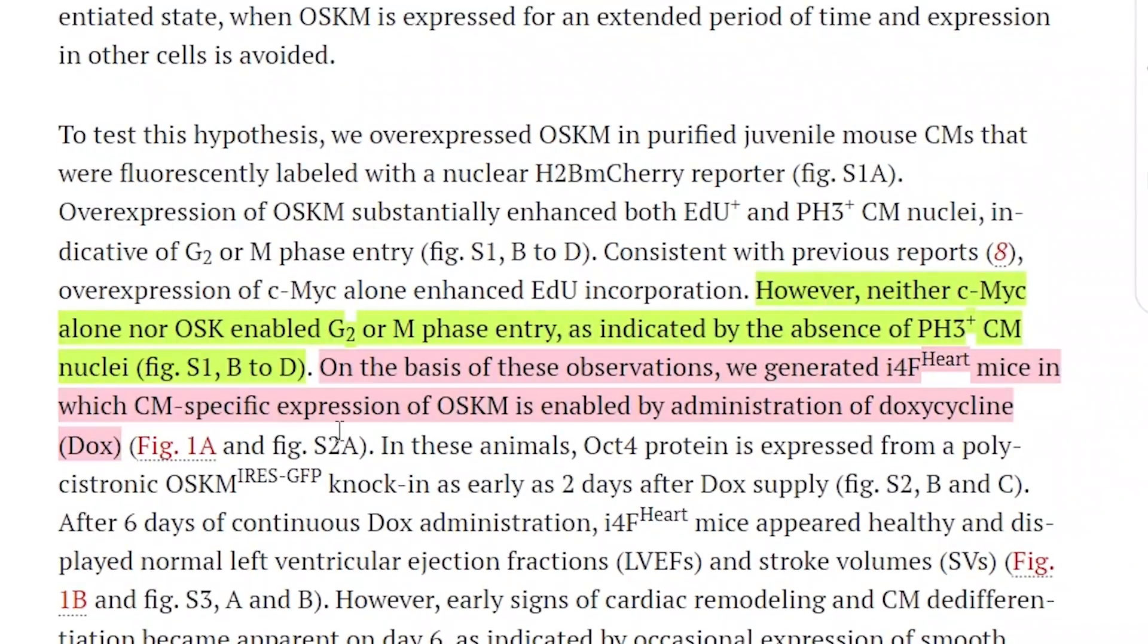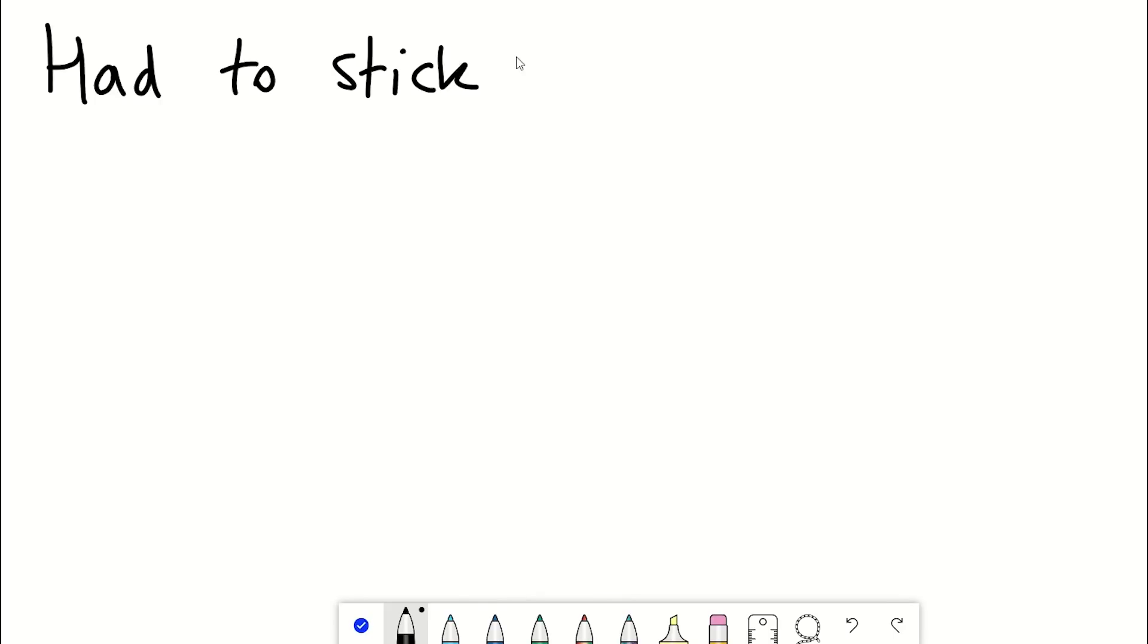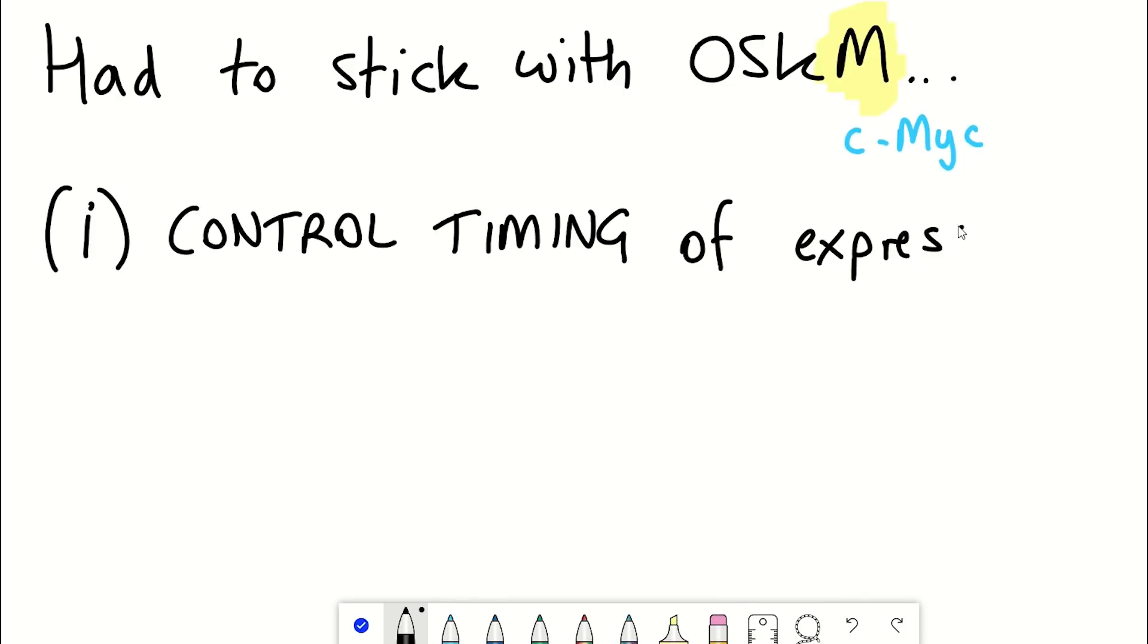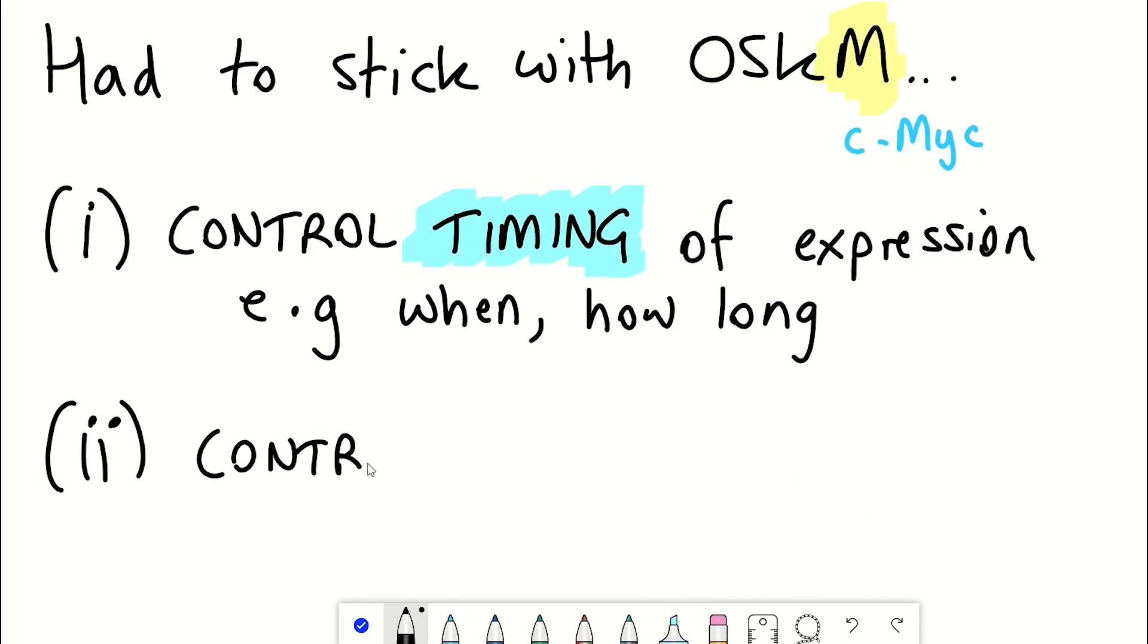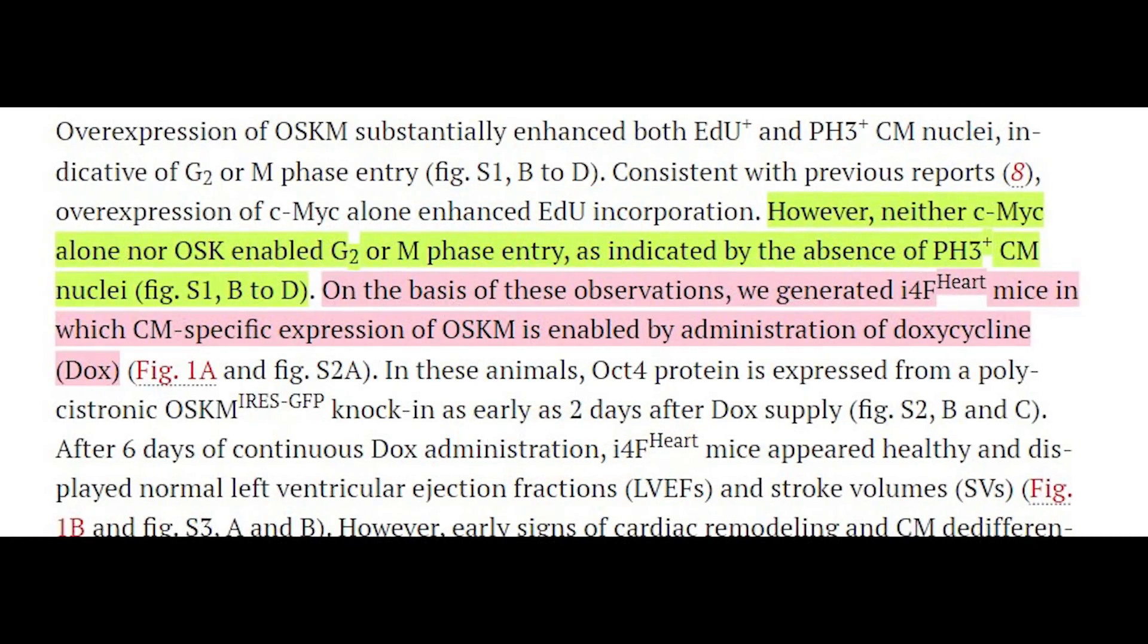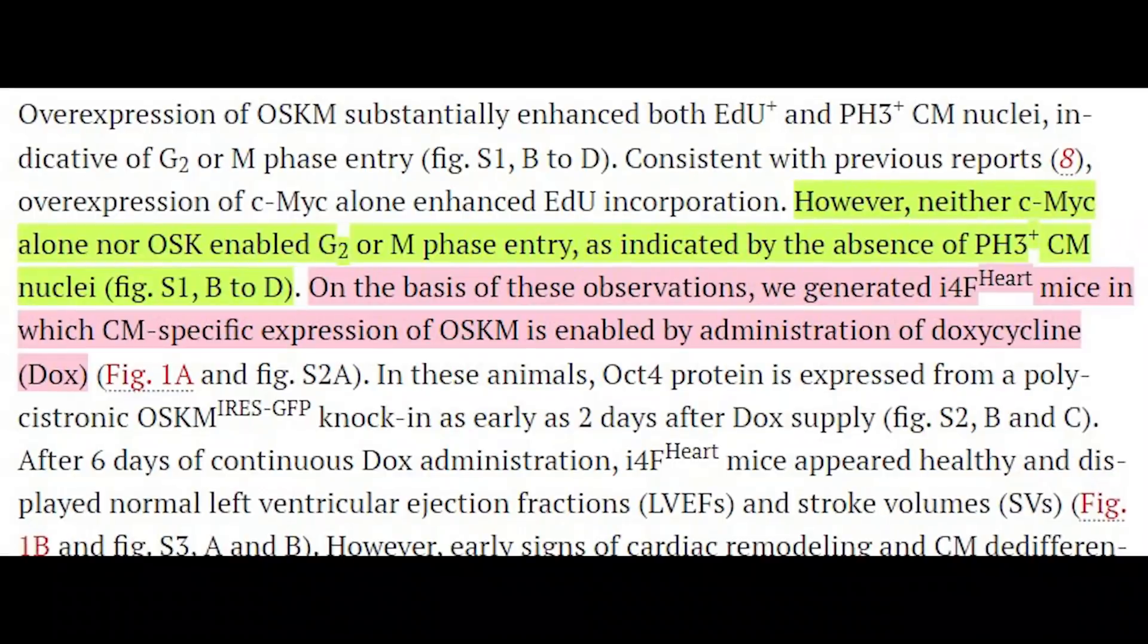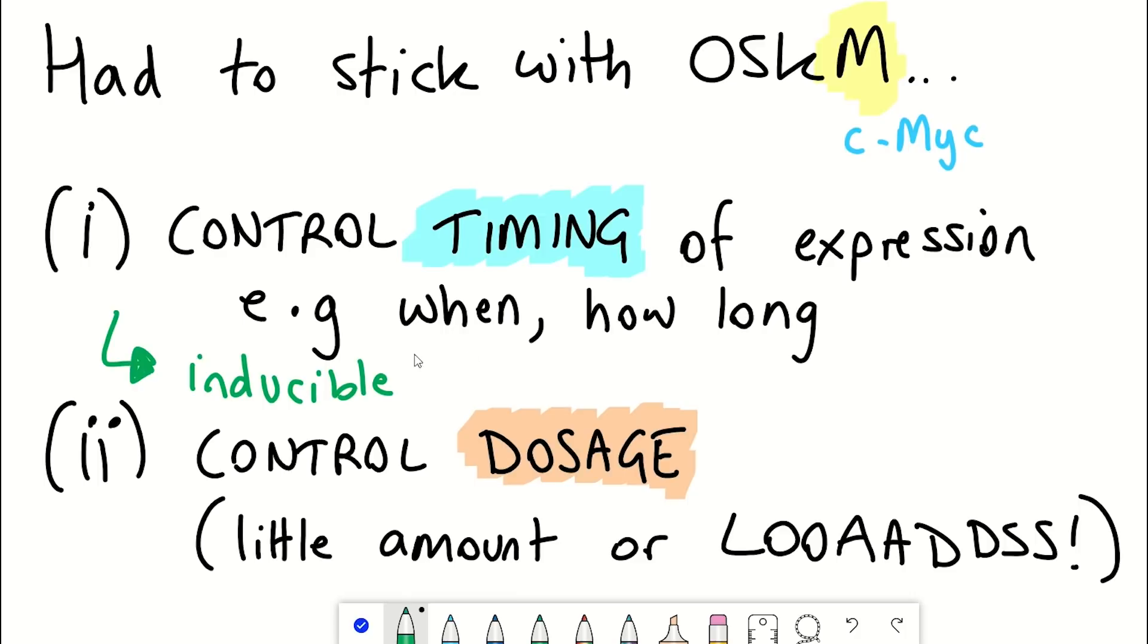But there are other tricks that they can use to mitigate against the potential tumorigenic effects of c-MYC. One is controlling timing of the expression of these factors - i.e., when they get activated and for how long. Or maybe that's already two things. And then thirdly, they can control the dosage - how much c-MYC is going to be expressed. So whether it's a little amount or loads of it, or somewhere in the middle. So how do they actually test all of this? Well, they use a genetic mouse model that only expressed these factors in cardiomyocytes when they were given doxycycline. So it was an inducible system. And so because they could induce it with this drug, they could time when these factors were activated in the mice.